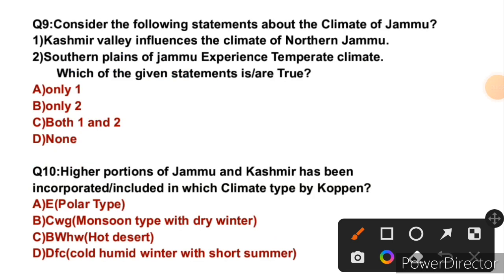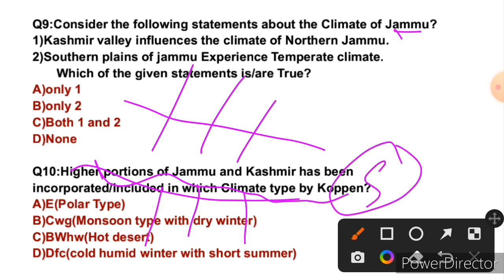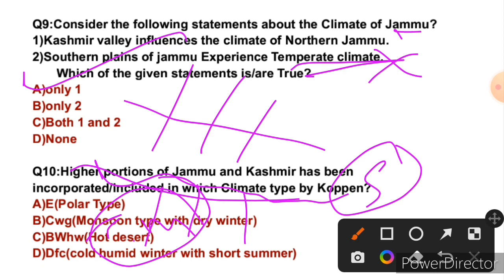Question 9: Consider the following statements about the climate of Jammu. Statement 1: Kashmir Valley influences the climate of northern Jammu — this is correct. Statement 2: Southern plains of Jammu experience temperate climate — however, the southern Jammu Plains below Shivalik have a tropical monsoon climate, not temperate. So statement 2 is incorrect. Only the first statement is true, so the right answer is A.